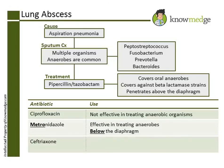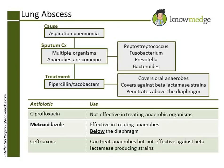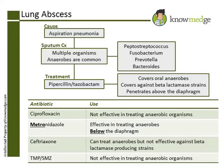Choice D: Ceftriaxone can treat anaerobes, but is still not effective against the strains that produce beta-lactamase. And finally, Choice E: Trimethoprim-sulfamethoxazole will not work against oral anaerobes.